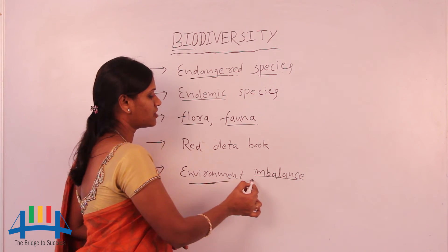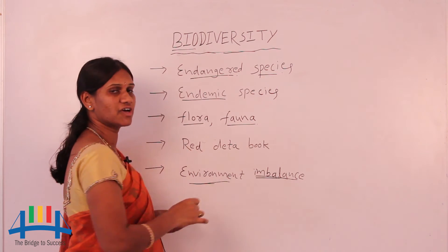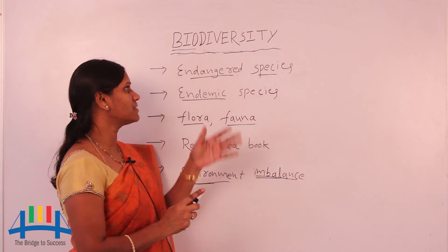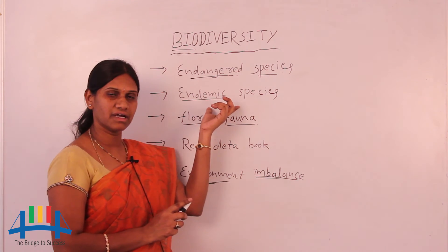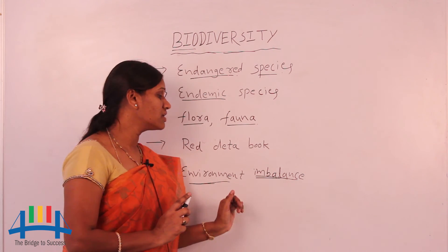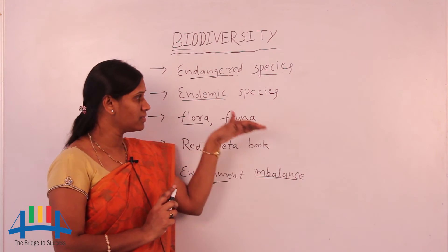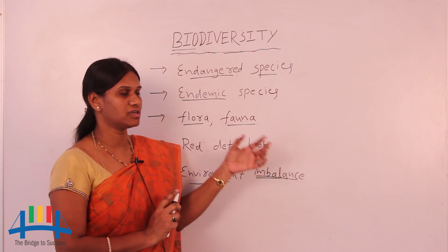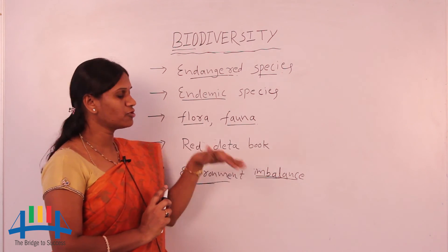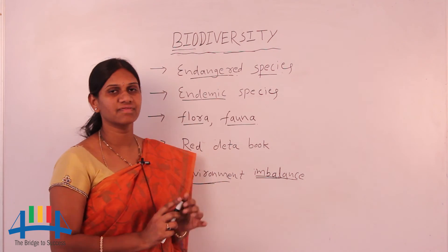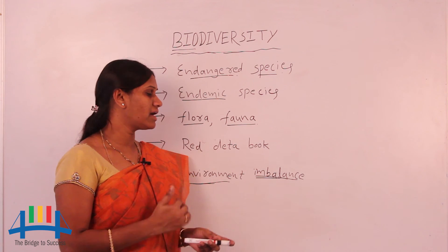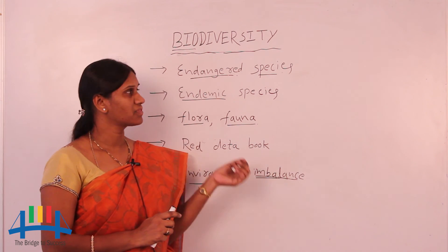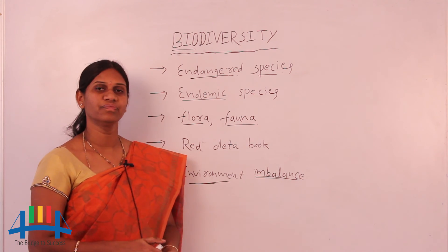When biodiversity is sufficient and proper, the environment is balanced. Otherwise, maybe endangered species or endemic species lead to environment imbalance. So we should give protection, avoid pollution, and avoid hunting to maintain biodiversity — so the proper number is maintained and the environment is also balanced. This is the topic of biodiversity.